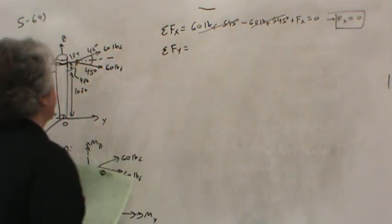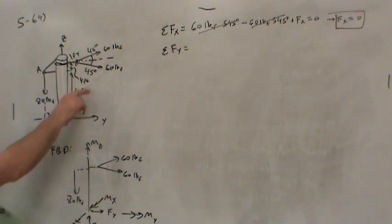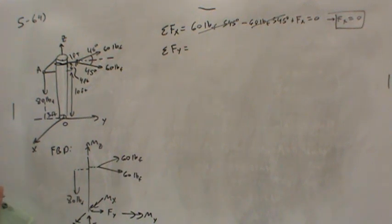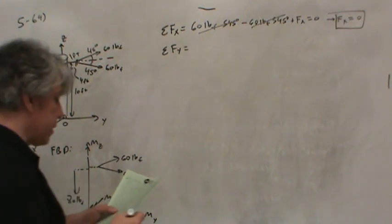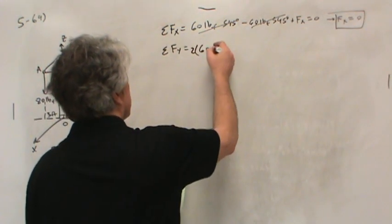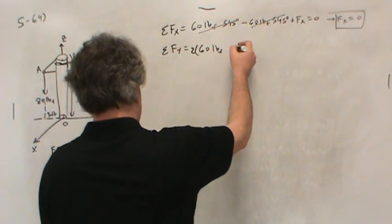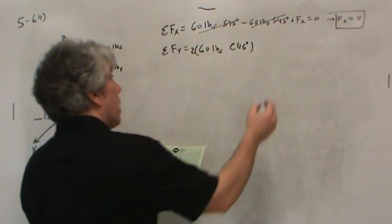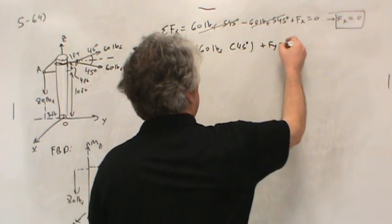Summing forces in the Y direction, well, the Y direction is this way. These two 60-pound loads are going to add in that direction. And there's no component of A in the Y direction, so I think we're going to end up with a force at the base. So there's two of them, 60-pound force times cosine 45 degrees, plus Fy equals zero.